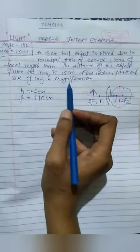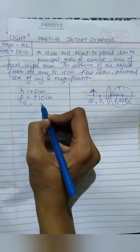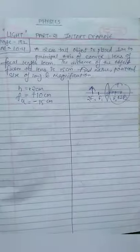The distance of the object from the lens - object distance u is given as 15 cm. u is always negative whether it is a mirror or lens.